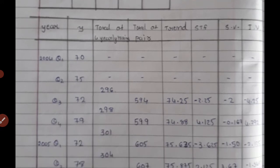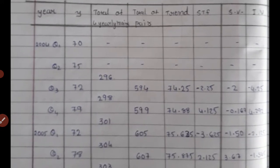To calculate the sum, since there are 4 quarters, you draw a total column. You use the 4-yearly moving method. In this 4-yearly moving method, you calculate and make columns. In the second column there is information, and in the third column it is called the total of 4-yearly moving, or moving total.